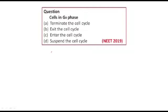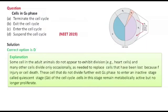Hello students, in this video tutorial we are going to discuss some NEET PYQs. First question: a cell in G0 phase — what happens? First option is termination of the cell cycle, second option is exit the cell cycle, third is enter the cell cycle, and fourth is suspend the cell cycle.